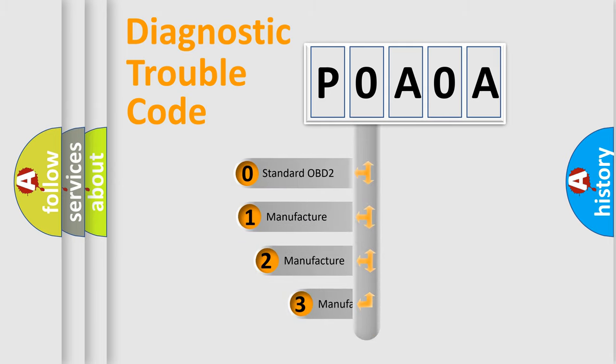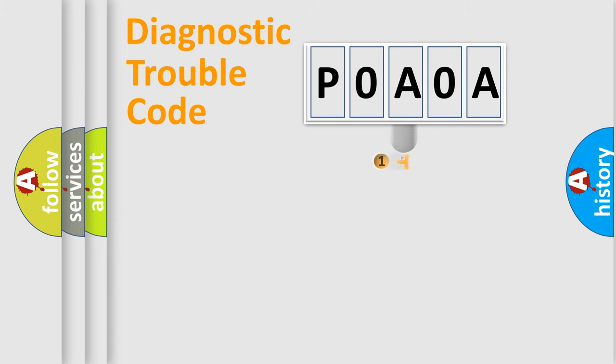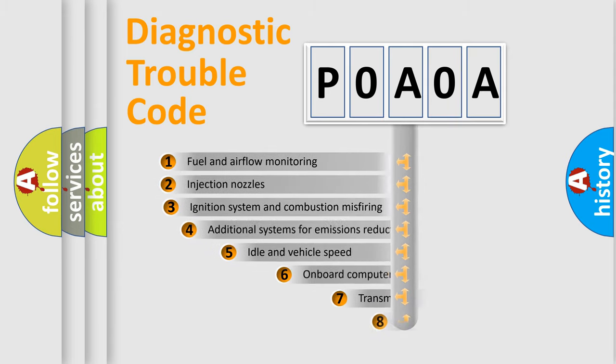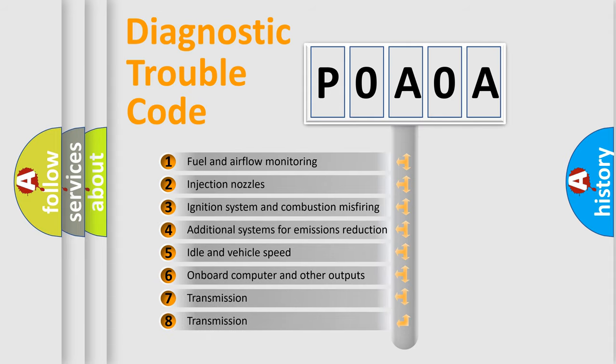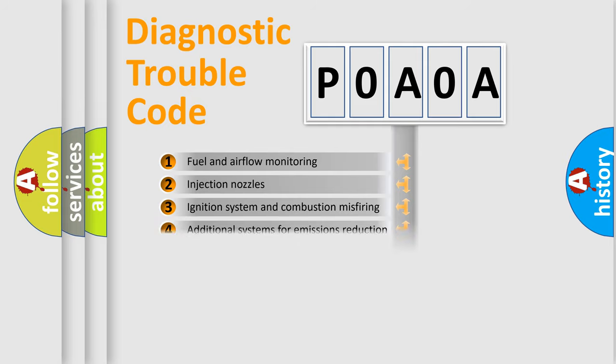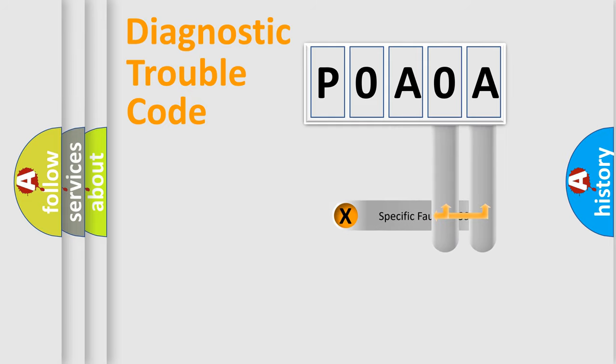If the second character is expressed as zero, it is a standardized error. In the case of numbers 1, 2, or 3, it is a manufacturer-specific expression of the car specific error. The third character specifies a subset of errors. The distribution shown is valid only for the standardized DTC code. Only the last two characters define the specific fault of the group.